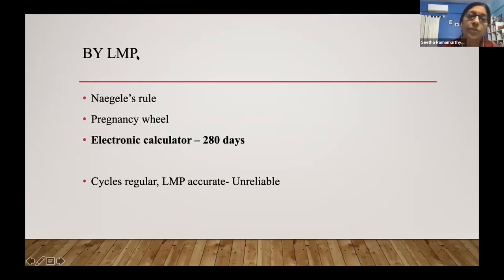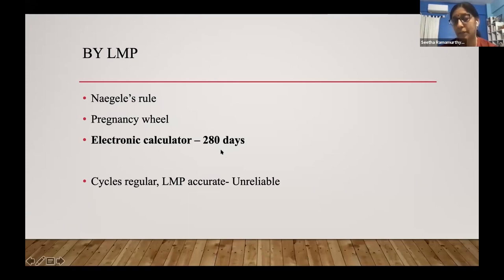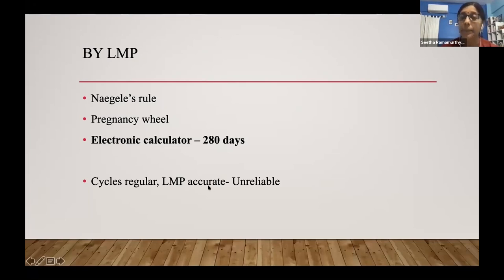Most women don't remember their LMP — the husbands don't remember it either. For those who are sure, we can use Naegele's rule or the pregnancy wheel; ultrasound machines calculate it as 280 days. If a woman has regular cycles and is fairly sure of her LMP, you match the ultrasound findings with her LMP. With assisted reproductive pregnancies, you go by the embryo transfer date.